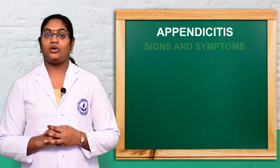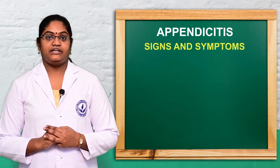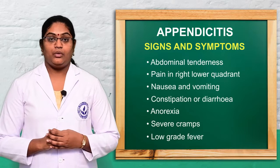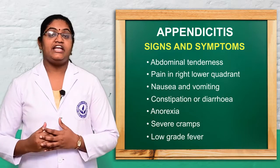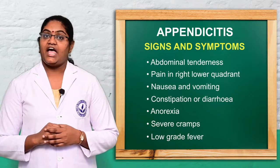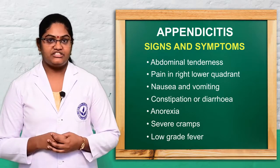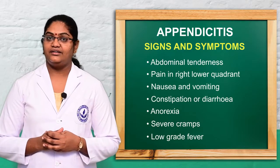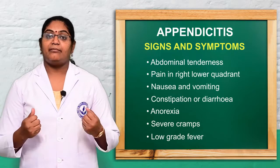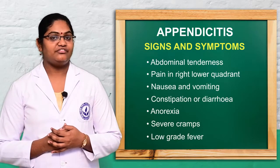The clinical manifestations, or signs and symptoms, of appendicitis include abdominal pain — mostly occurring in the right lower quadrant region of the abdomen — abdominal tenderness, nausea, vomiting, constipation or diarrhea, anorexia, and severe cramping. These are the common signs and symptoms of appendicitis.